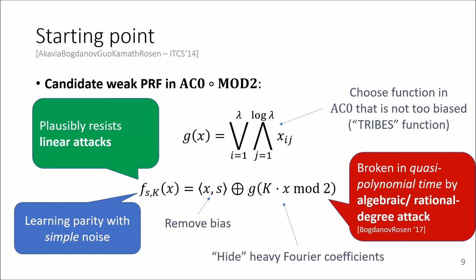This candidate can be shown to resist linear attacks based on a simple combinatorial conjecture. The problem is that it can be broken in quasi-polynomial time by a so-called algebraic or rational degree attack, as was shown by Bogdanov and Rosen in 2017.